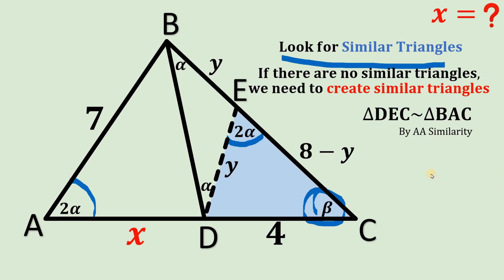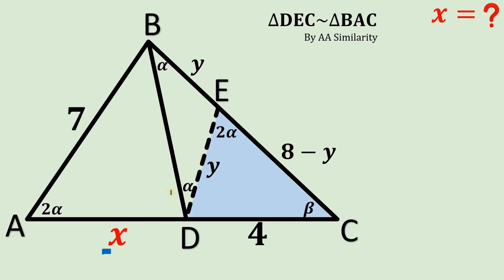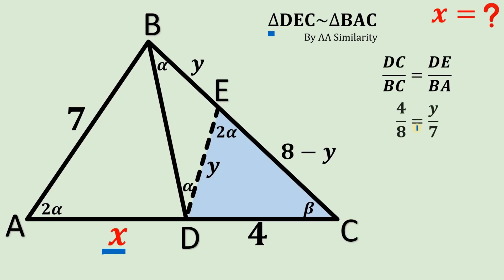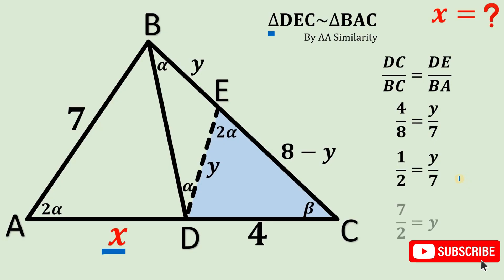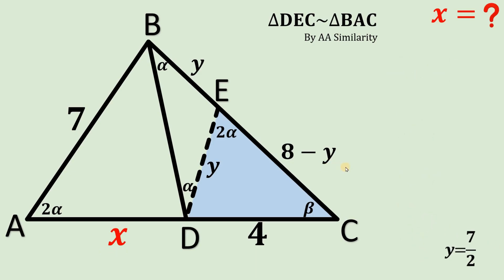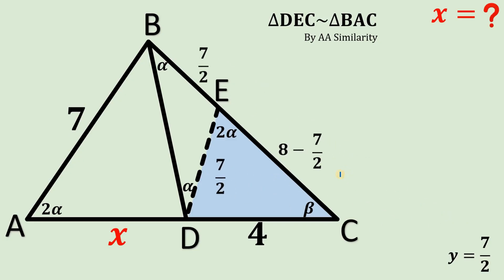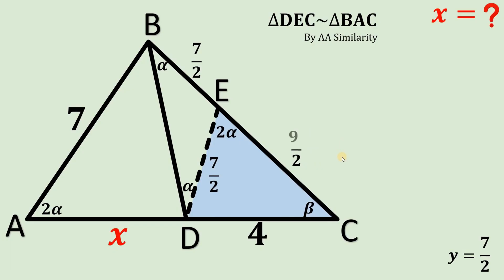Using the concept of similar triangles, we can find the value of segment x. First, the ratio of DC to BC equals the ratio of DE to BA. Substituting the side lengths: four over eight equals y over seven. Simplifying four over eight gives one over two. Multiplying both sides by seven, we get y equals seven over two. We now know the length of segment y. We can replace all y with seven over two, and eight minus seven over two equals sixteen minus seven over two, which is nine over two.